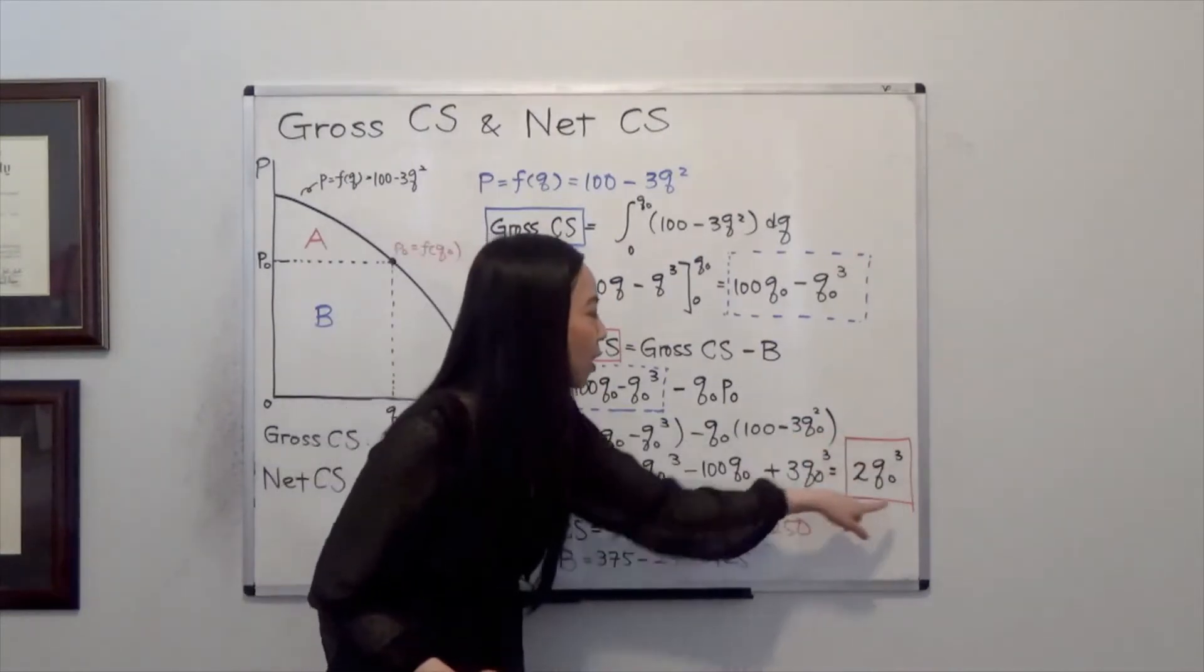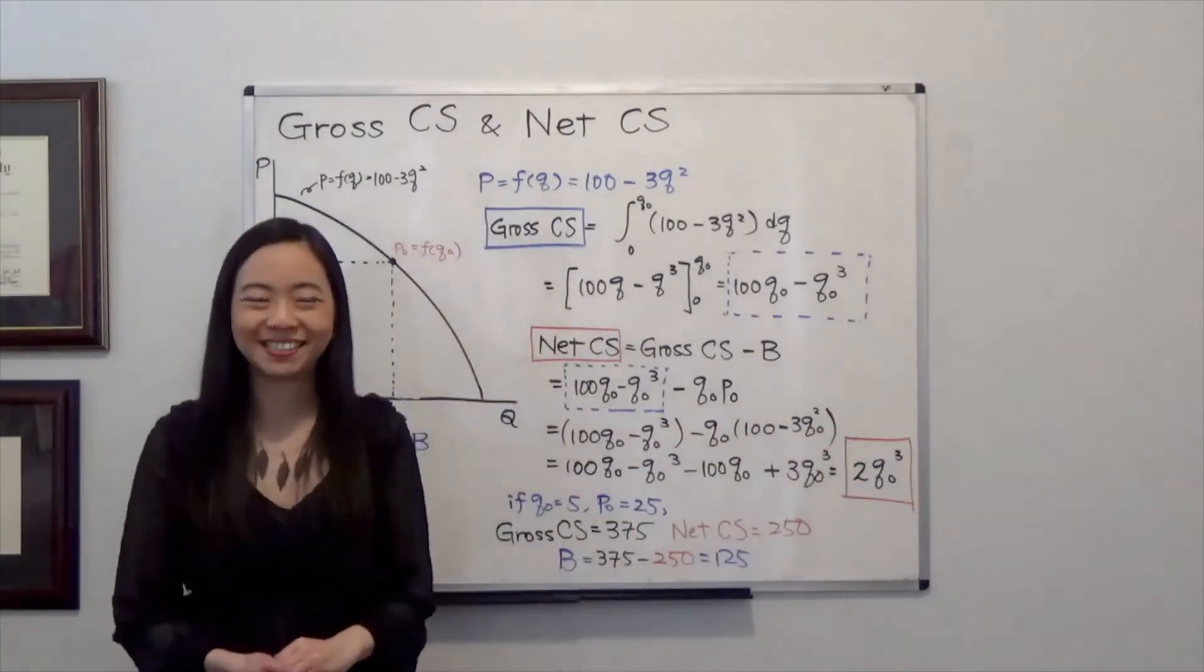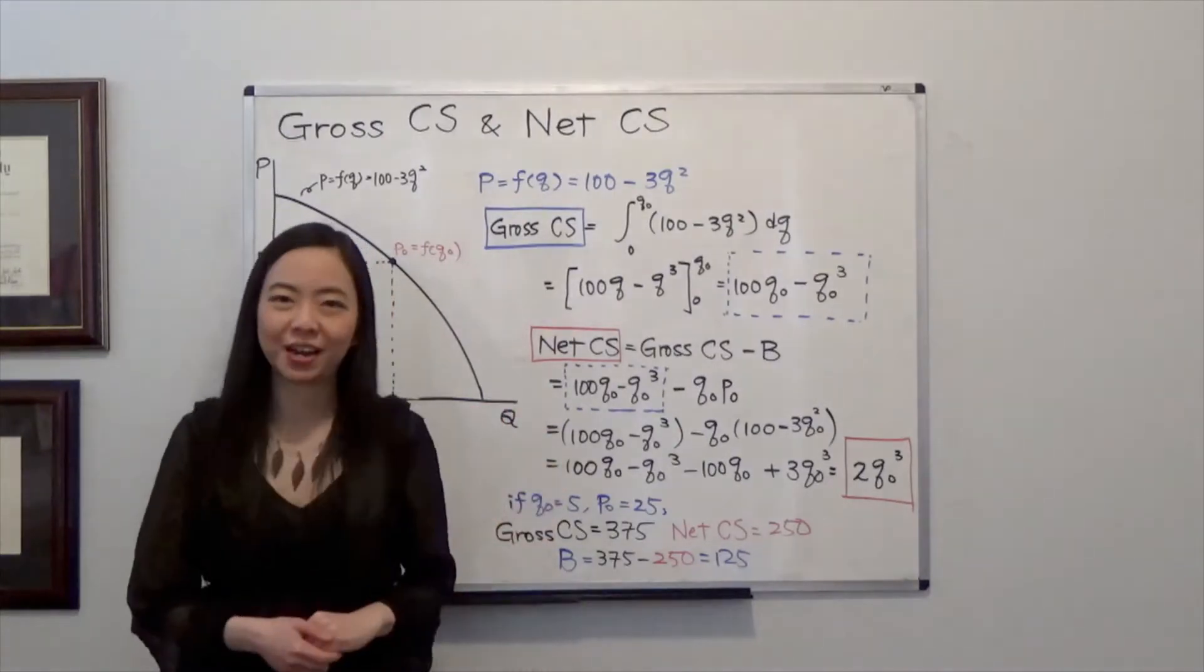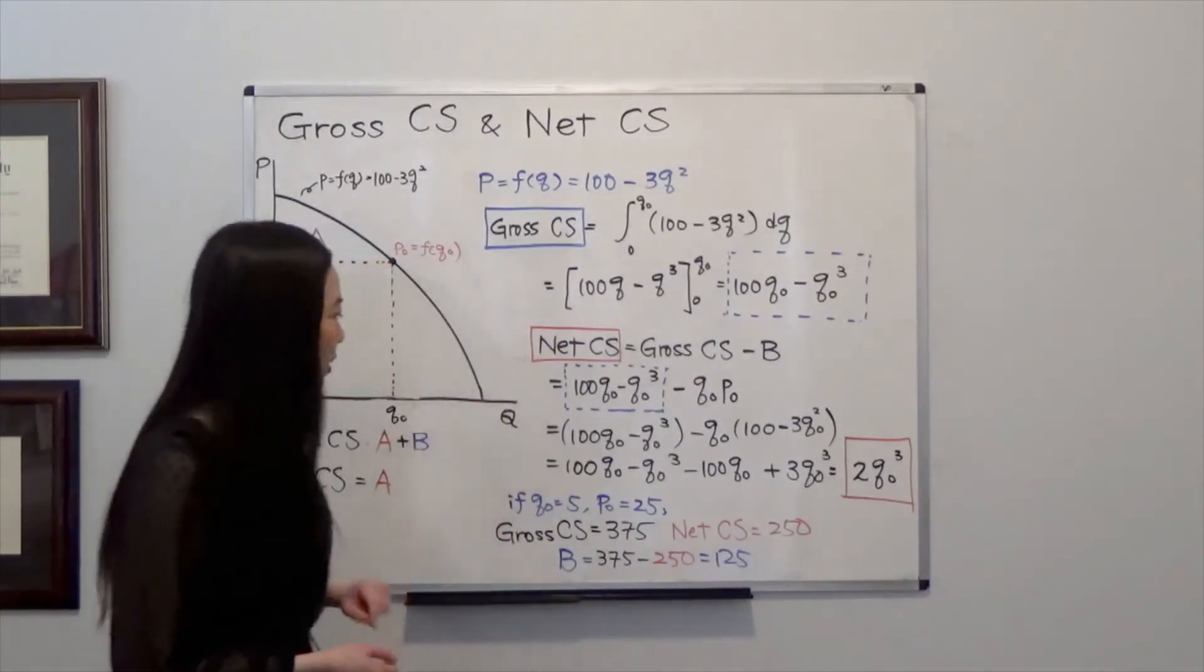Now it's all very abstract. Let's try a numerical example. Suppose your Q0 is equal to 5.